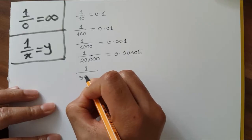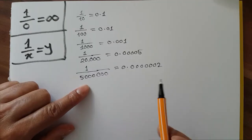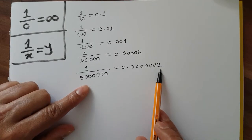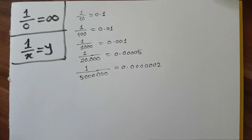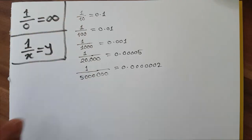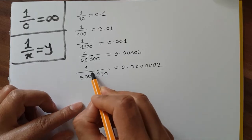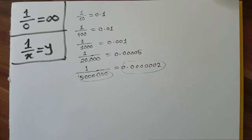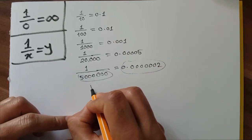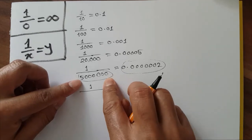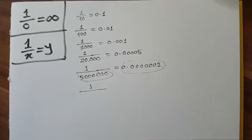Let's consider once again a big number — 1 over 5 million. In that case it will be 0.0000002. There is a clear correlation between the first equation and the last equation, changing gradually. The larger this number, the shorter the result.